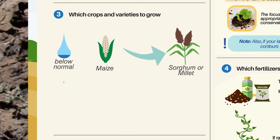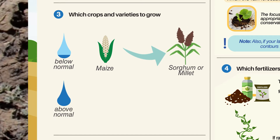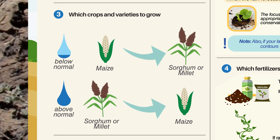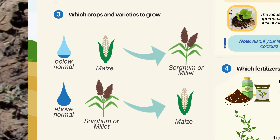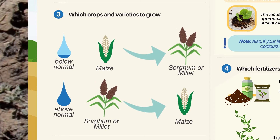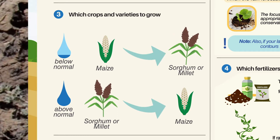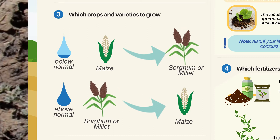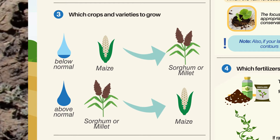If rains are predicted as normal to above normal, grow usual varieties recommended for agroecological zones. Select high-yielding varieties of the crops recommended for your area, or change to long-duration high-value crops — replacing sorghum and millet with maize. Note: it is important to take into account spatial and temporal distribution in decision-making. Good temporal distribution is when the rainfall is well-spread throughout the season.